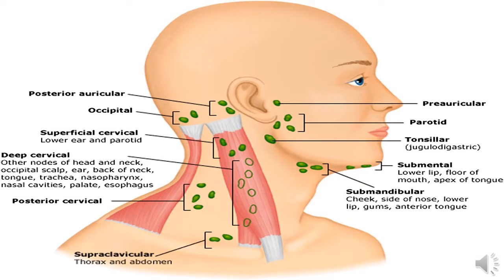The major locations of the lymph nodes present in our body include: posterior auricular, occipital, superficial cervical, deep cervical, posterior cervical, supraclavicular, preauricular, parotid, tonsillar, submental, and submandibular lymph nodes.